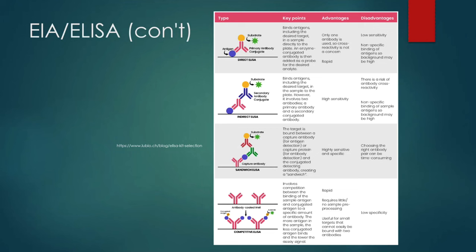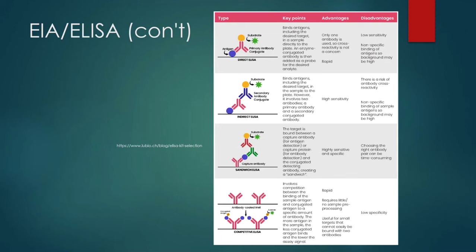The problem with direct ELISA is sensitivity. Think of it like a Swiss cheese method — the more layers of testing you add, the less likely you are to get a non-specific signal. With only one antibody, it could bind to antigens that aren't your target, giving false positives. So direct ELISA can be quick if you need a fast answer, but has potentially lower specificity and sensitivity.